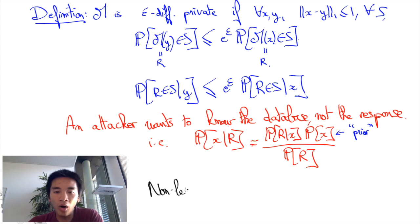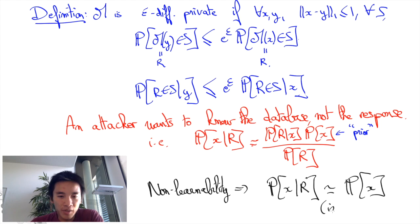Non-learnability given R means that the probability of x given R should be about the same as the probability of x, i.e. the posterior belief of the attacker has been mostly unchanged.